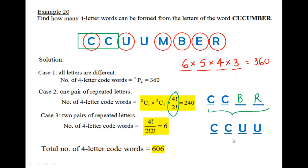So the total number of ways of having this four-letter code words would be the sum of 360 plus 240 plus 6, which gives us 606.